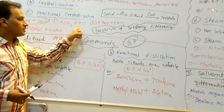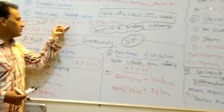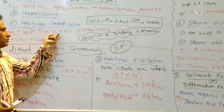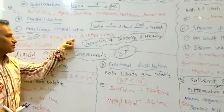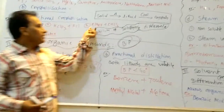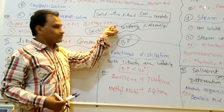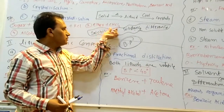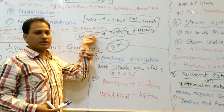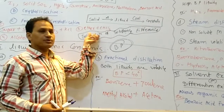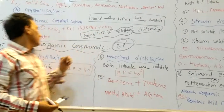KCl in water is less soluble, and KCl in another solvent is more soluble. Ethers and chloroform are used in purification in the petroleum industry. Alcohol and water are separated by fractional distillation.